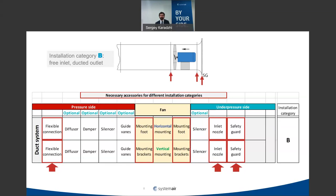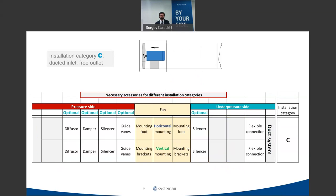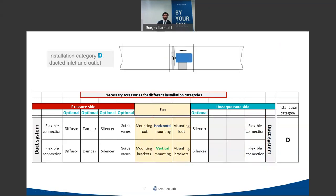For Category C — ducted inlet, free outlet — you should have a flexible connection on the inlet to isolate the duct from the fan, plus mounting feet with dampers to prevent vibration spread. A diffuser on the outlet is also recommended to restore dynamic pressure. For Category D — ducted inlet and ducted outlet — flexible connections on both sides and mounting feet with dampers are required. Silencers and air dampers are optional.